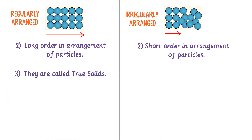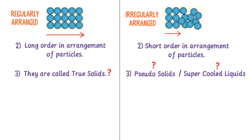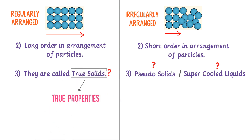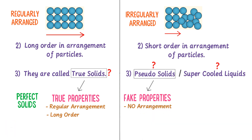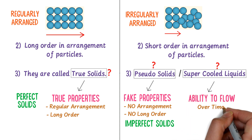Crystalline solids are called true solids. Why are crystalline solids called true solids and amorphous solids called pseudosolids or supercooled liquids? Crystalline solids are called true solids because they have the true properties of solids, like regular arrangement of particles and long-range order. We call amorphous solids supercooled liquids because they have the ability to flow like liquids over time if temperature changes.